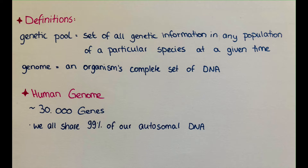The human genome consists of roughly 30,000 genes, much less than scientists had thought earlier. And if we compare human genomes to each other, we will see that all humans share approximately 99% of their autosomal DNA — so we're 99% genetically similar.